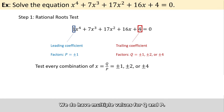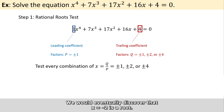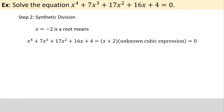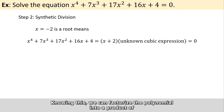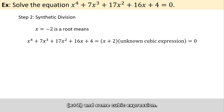So we do have multiple values for q and p. Skipping the working, we would eventually discover that x equals minus 2 is a root. Knowing this, we can factorize the polynomial into a product of x plus 2 and some cubic expression.